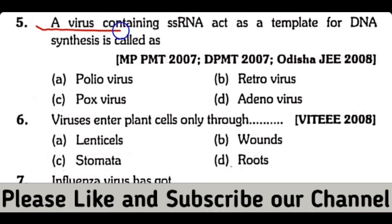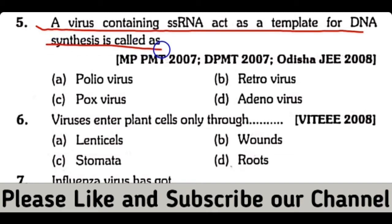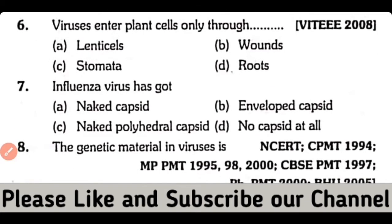Question number 5. A virus containing single-stranded RNA that acts as a template for DNA synthesis is called a polio virus, retro virus, pox virus, or adenovirus. So the correct answer is option B. Retro virus جو ہے وہ template کے طور پر use ہوتا ہے for DNA synthesis اور اس کے اندر single-stranded RNA present ہوتا ہے.